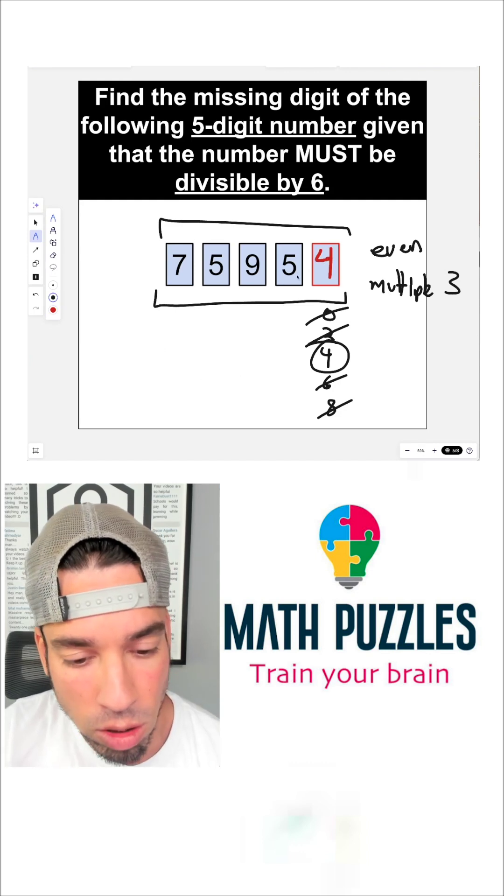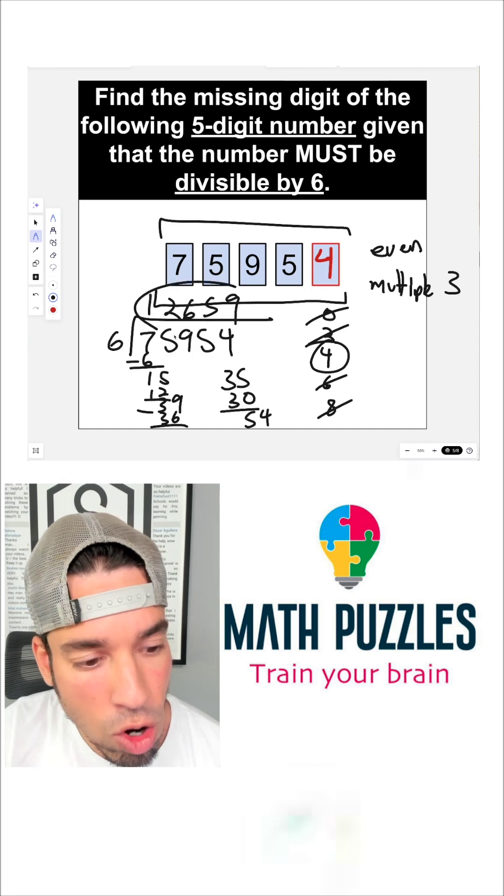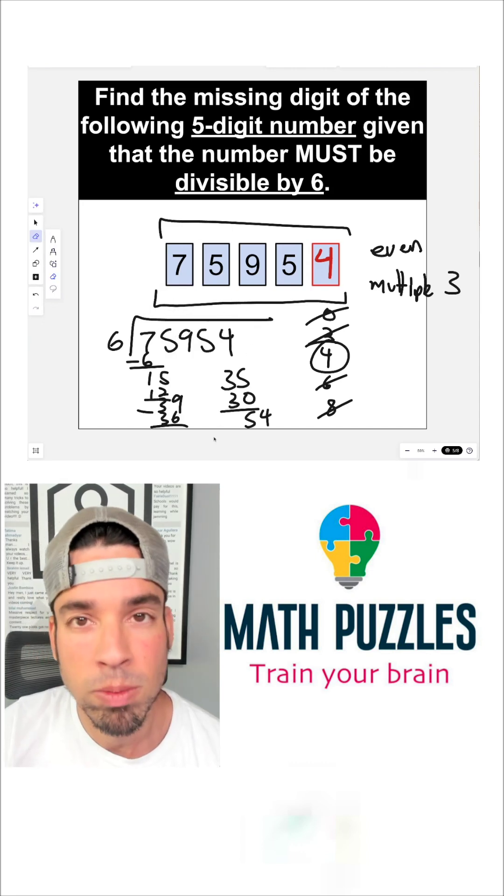We're now going to divide via long division by six. No remainder. So there's our confirmation. Boom, done.